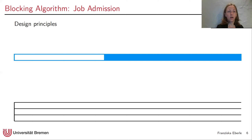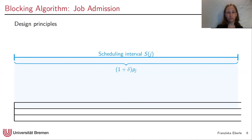First and foremost, our algorithm is non-migratory, although we measure its competitive ratio by comparing to an optimal migratory algorithm. Upon admission, we give each job a scheduling interval of length (1+δ) times its processing time. Delta is either given from the delta-commitment model, or we set δ = ε/2 in the no-commitment and commitment-upon-admission models. The job is supposed to only be scheduled within its scheduling interval, and therefore also has to complete within it.